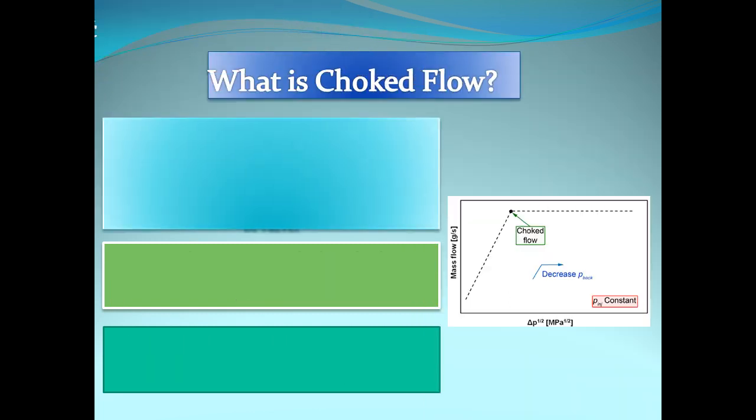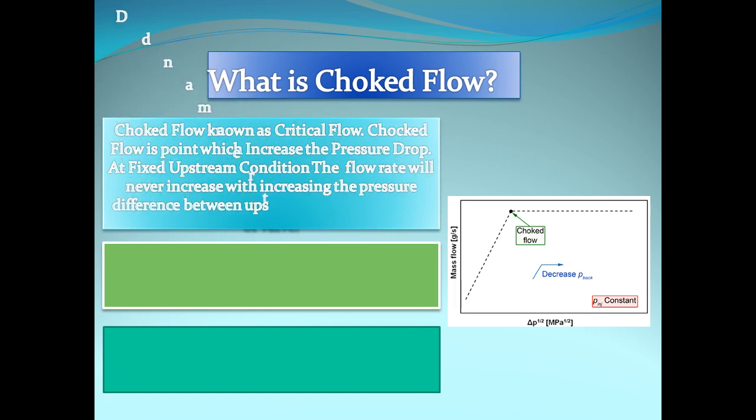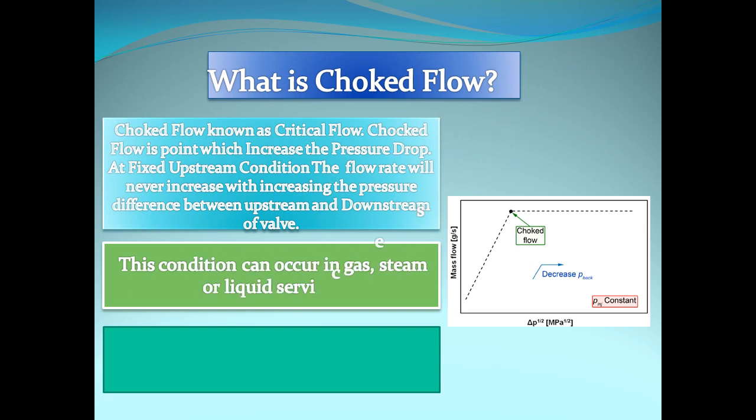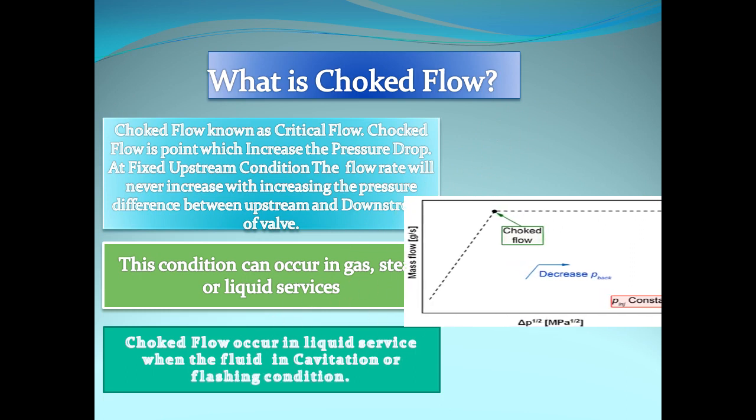What is Choked Flow? Choked flow is also known as critical flow. Choked flow is a point which increases the pressure drop. At fixed upstream conditions the flow rate will never increase with increasing the pressure difference between upstream and downstream of the valve. The conditions can occur in gas, steam or liquid service. Choked flow occurs in liquid service when the fluid is in cavitation or flashing conditions.